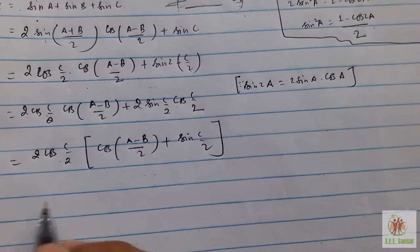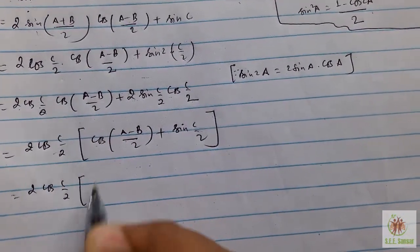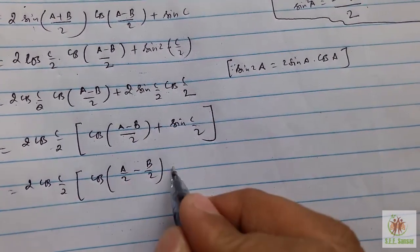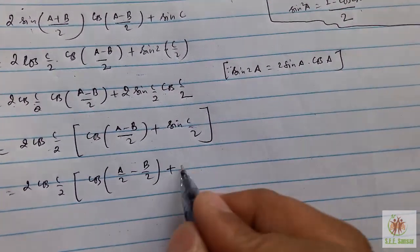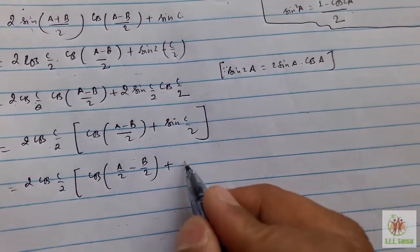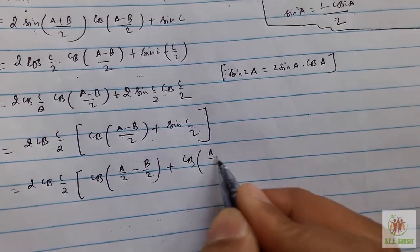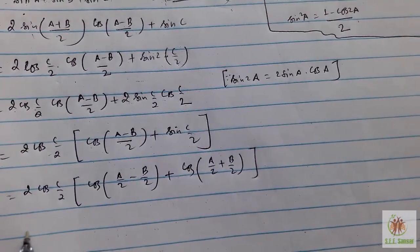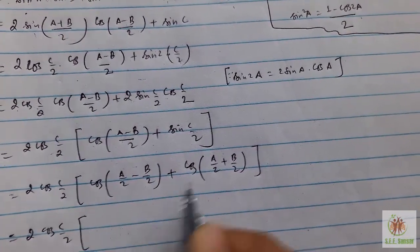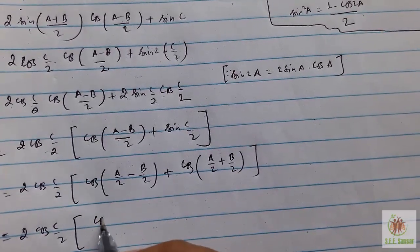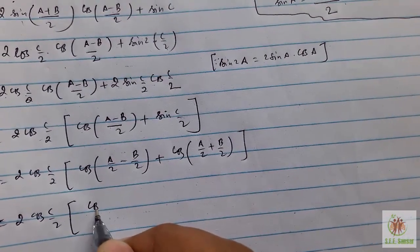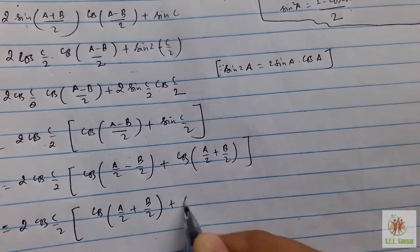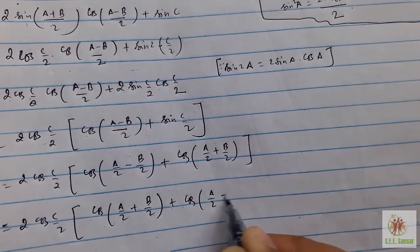So I use 2cos(C/2) here. We just derived that sin(C/2) means cos((A+B)/2) which can be written as cos(A/2 + B/2). So arrange this: 2cos(C/2)[cos(A/2 - B/2) + cos(A/2 + B/2)].